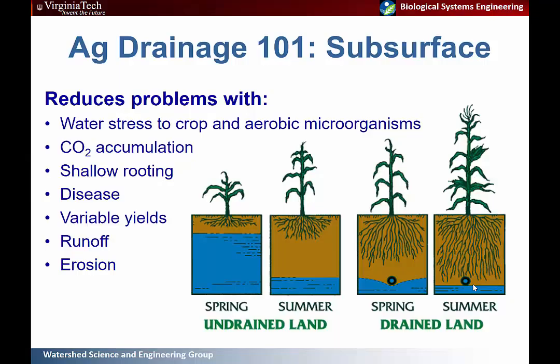With these healthier plants with better root development, you'll have less susceptibility to disease, more consistent yields, and you'll also benefit from reduced runoff and erosion because more of that water will be transmitted through the subsurface system rather than over the land.